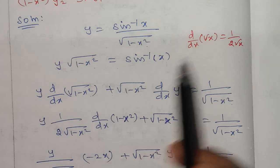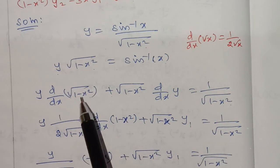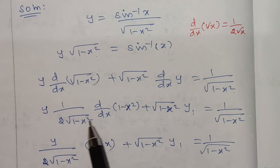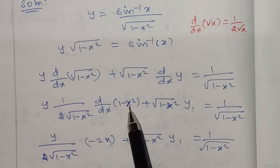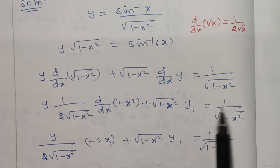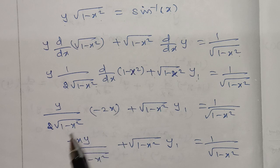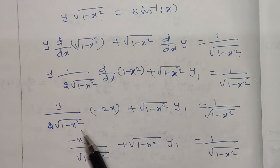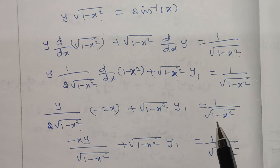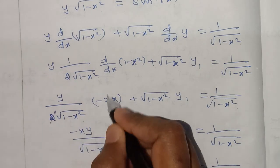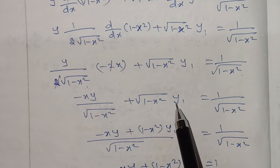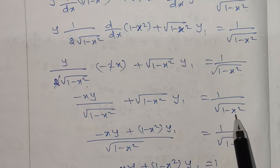Taking the derivative, we get y₁ equal to 1 divided by square root of 1 minus x squared. Simplifying, y₂ involves terms with x and the derivative expressions for y₁.